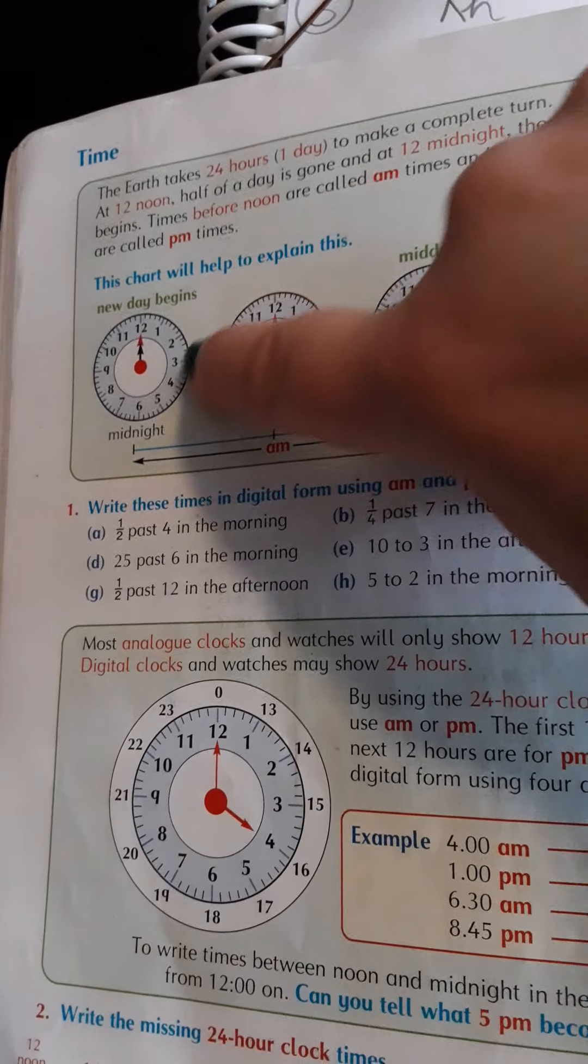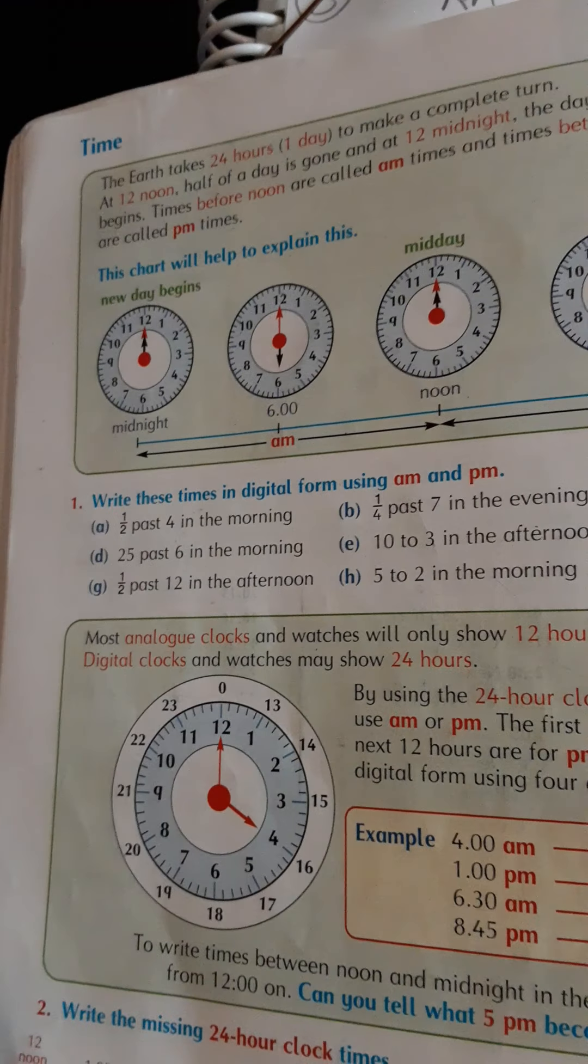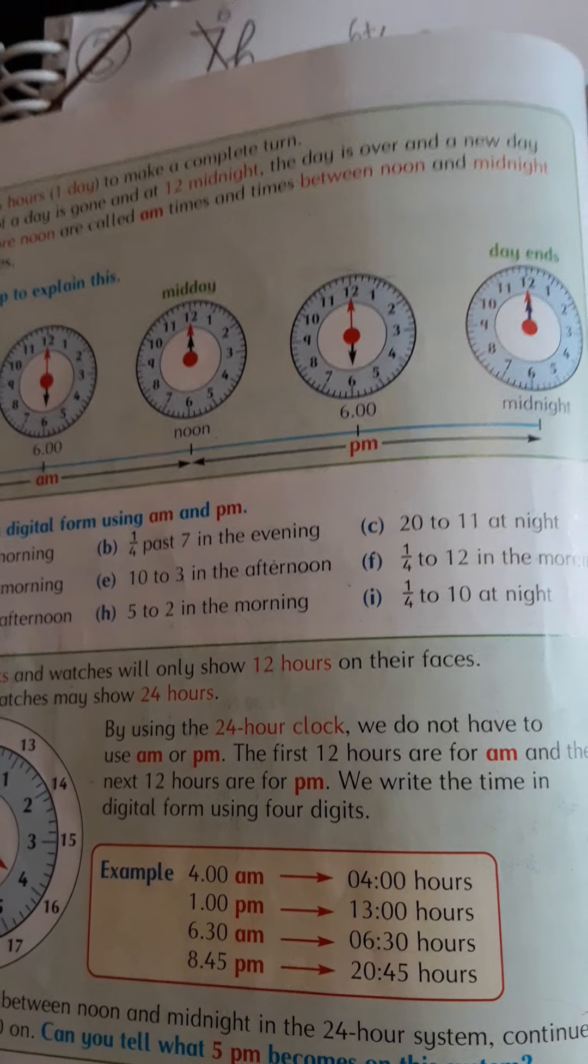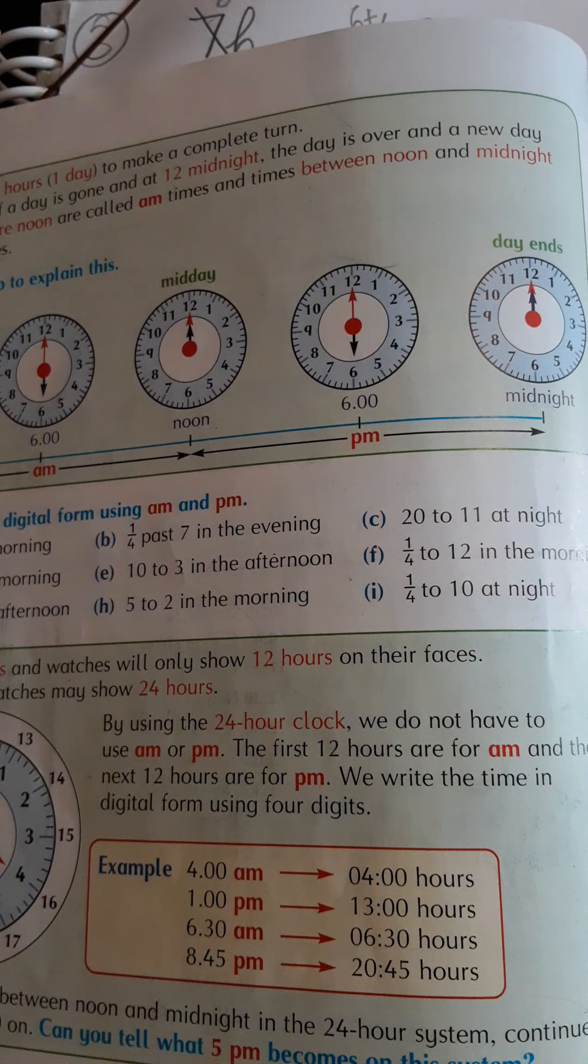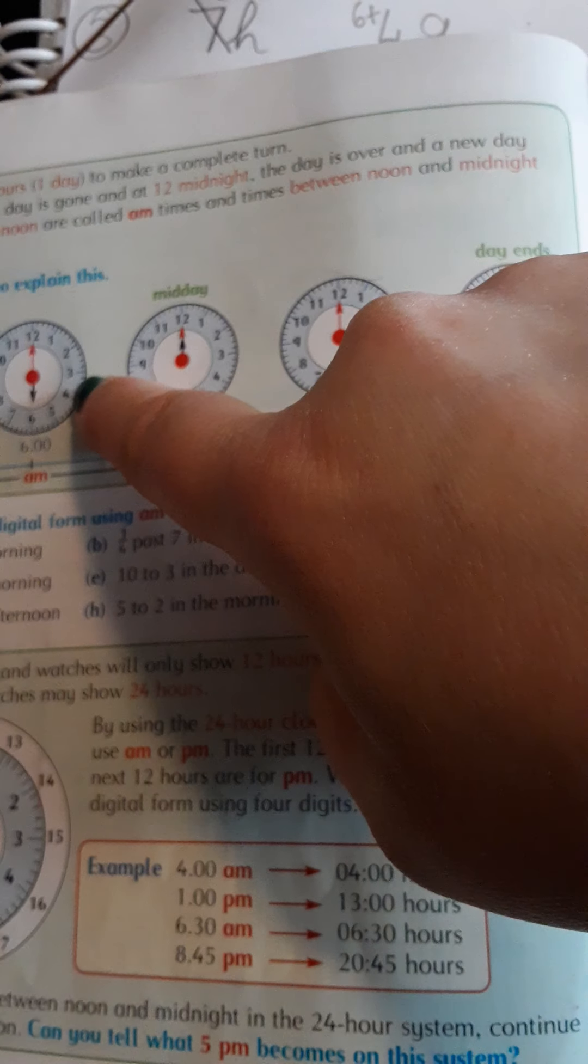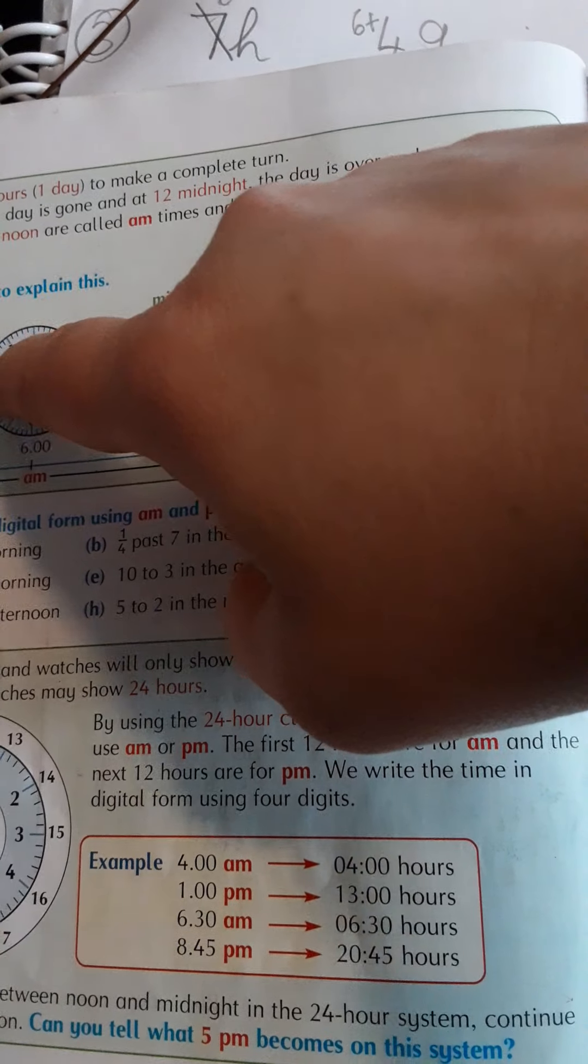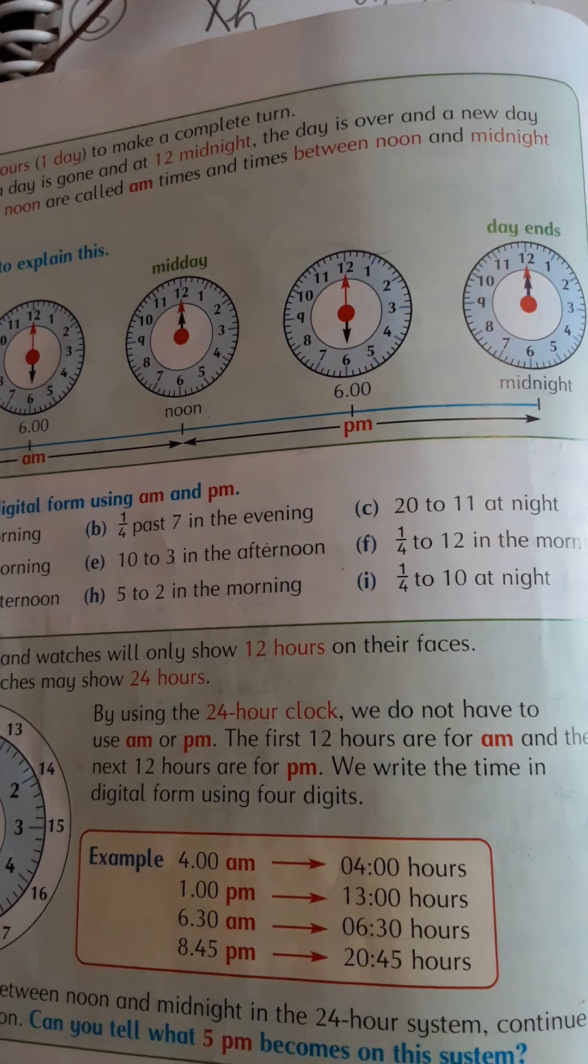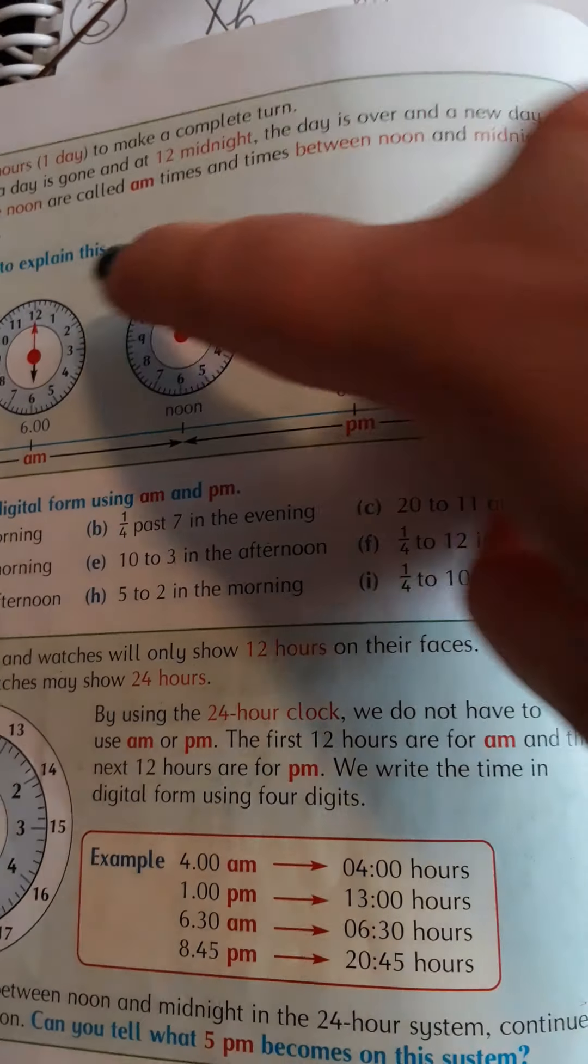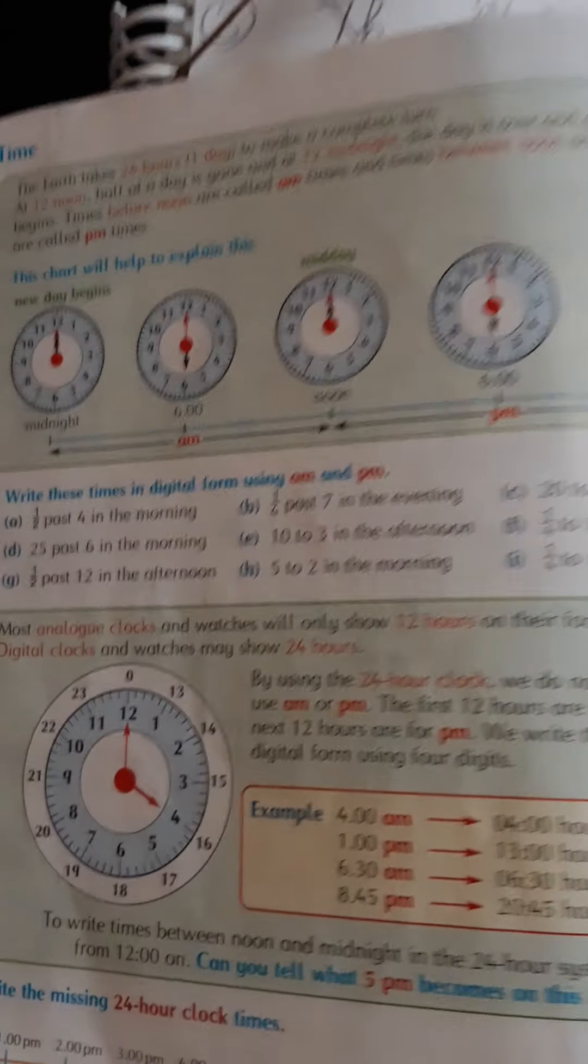25 past 6 - at 25 past the clock will be on the 5. 10 to 3 in the afternoon. It hasn't actually reached 3 o'clock, so it'll be 2. And then you have to get to 10 to 3, so it's 10 minutes to. So how many minutes have elapsed from 2 o'clock? That's what you need to be counting - the minutes that have elapsed all the way around. Try it for yourself and see how it goes for you.